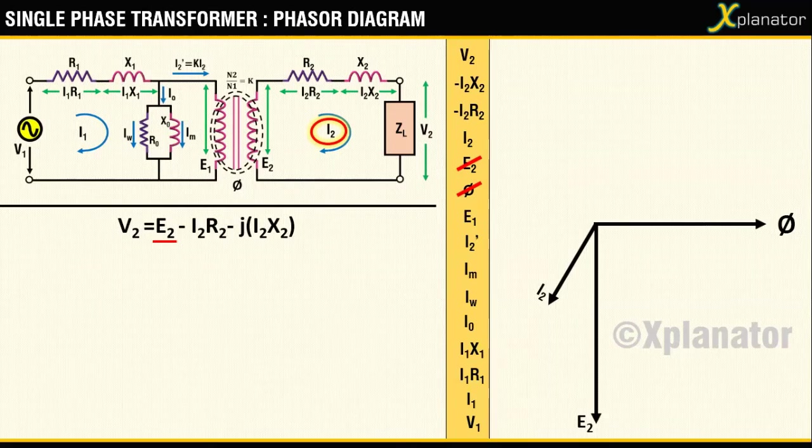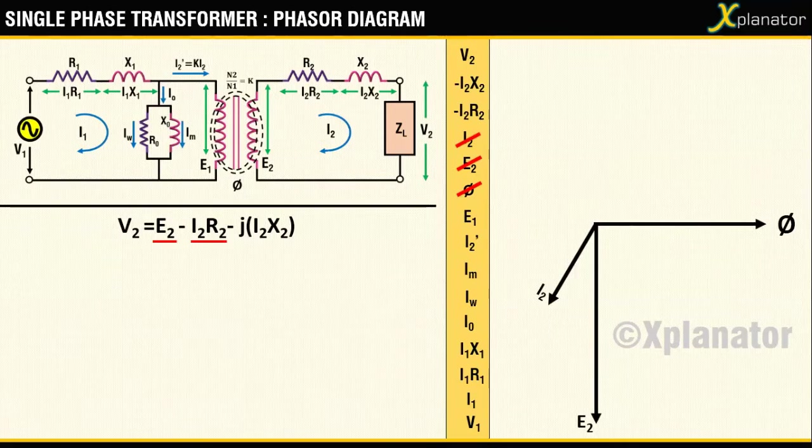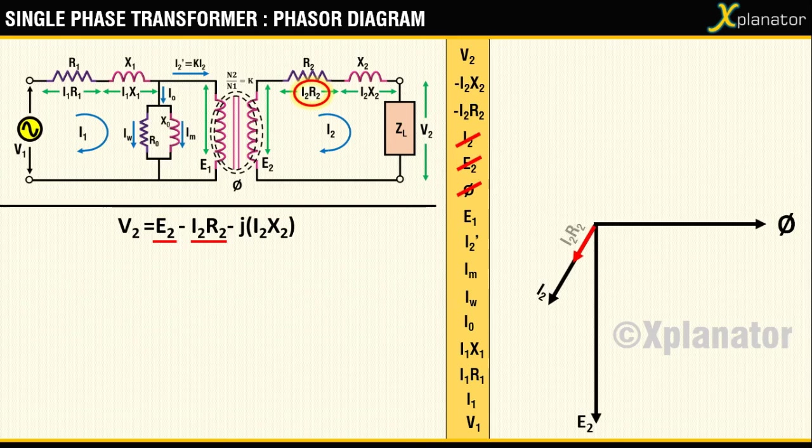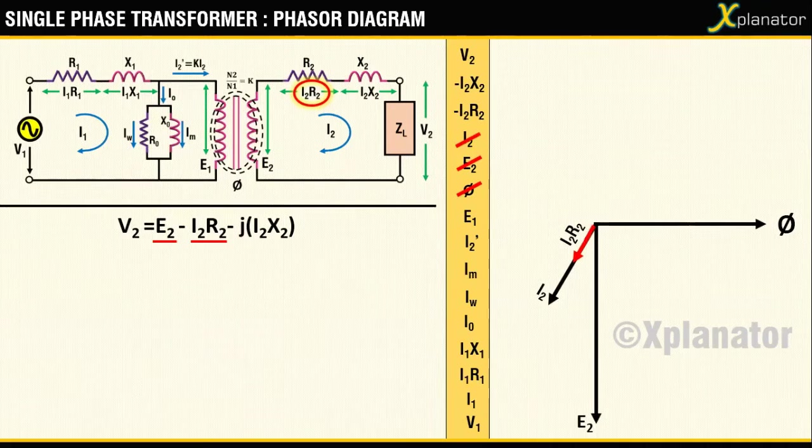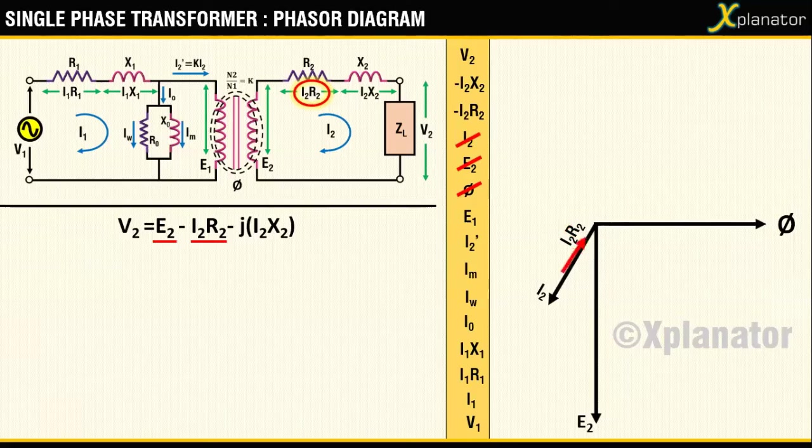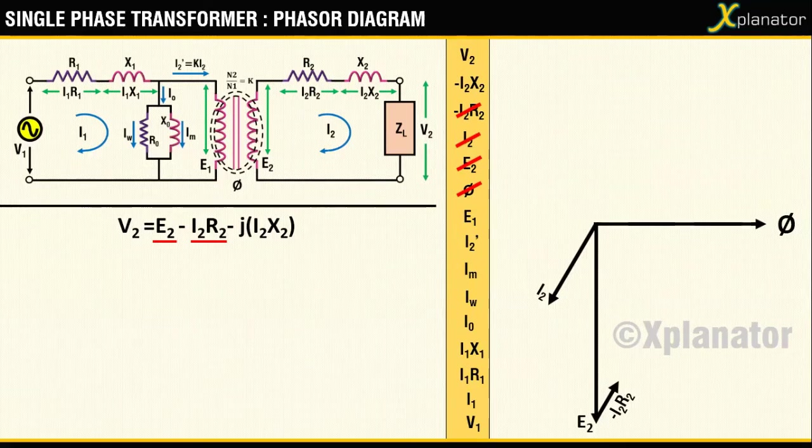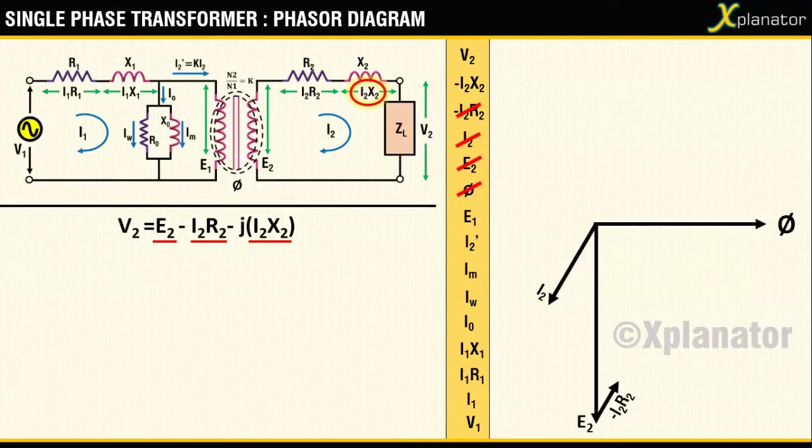The potential drop I2R2 across the resistor R2 will be in phase with the current I2, but the equation needs that minus I2R2 has to be drawn. For that, reverse the direction. This vector has to be added to E2, so shift this vector here to where E2 finishes.